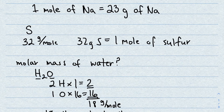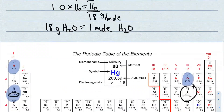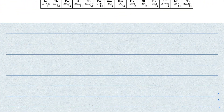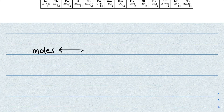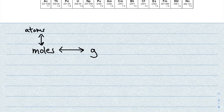So 18 grams of water is equal to one mole of water. We now have conversion factors for sodium, sulfur, and water, and we can convert between moles and grams. You've also already learned how to go from moles to atoms or molecules.